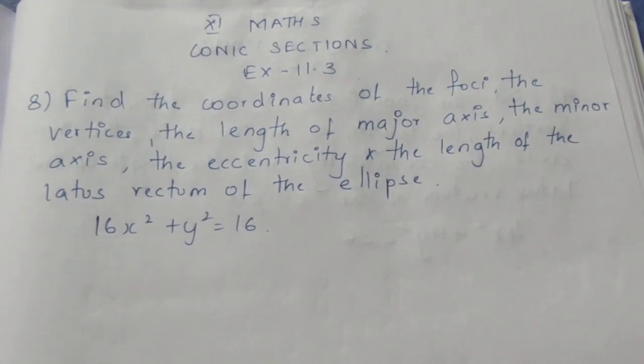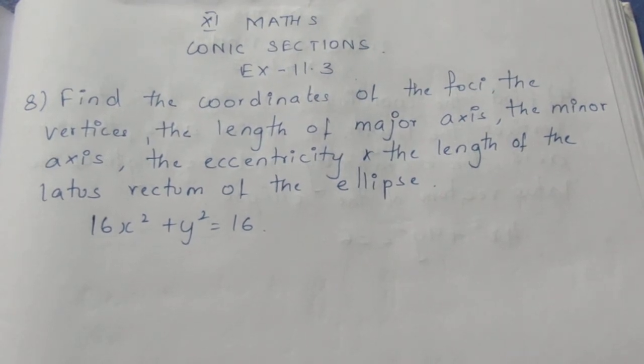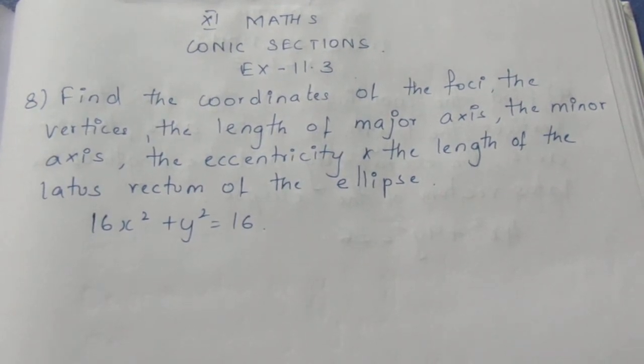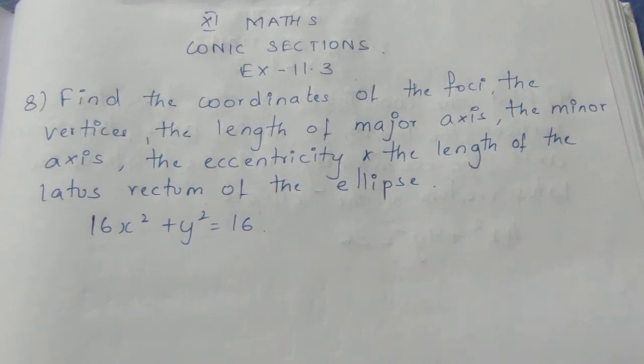Find the coordinates of the foci, the vertices, the length of the major axis, the minor axis, the eccentricity and the length of the latus rectum of the ellipse.